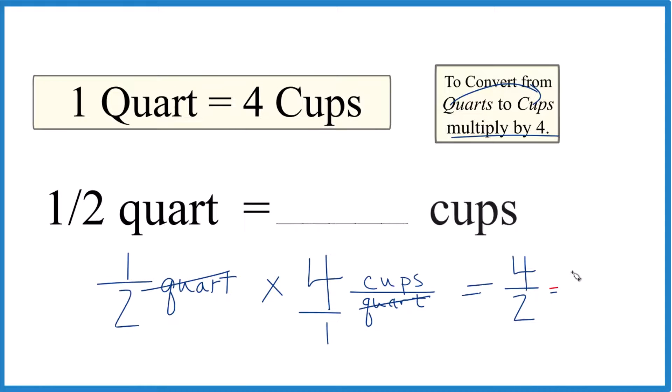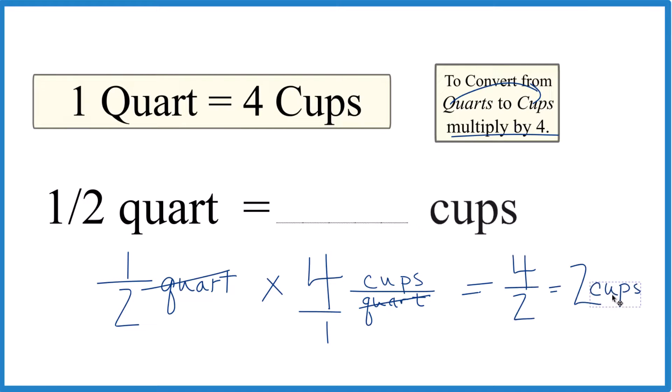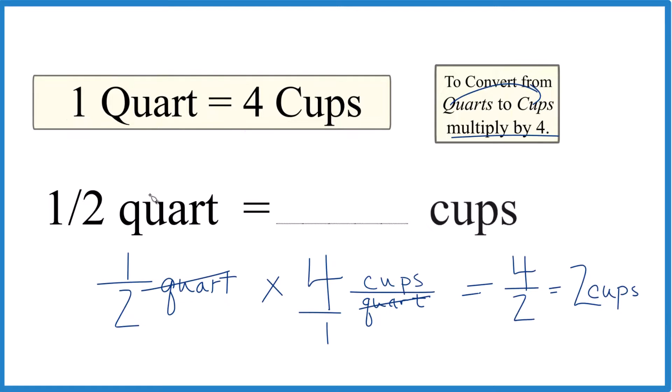So four over two, which is just two. And the units for that, they're going to be cups. So just like we found before, one half quart, that equals two cups.